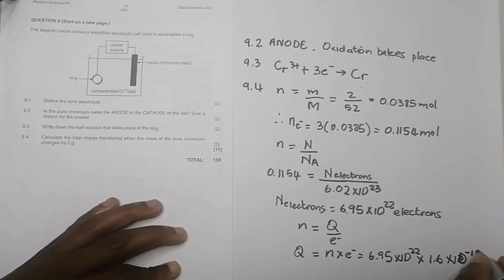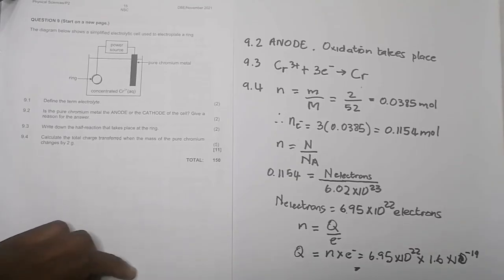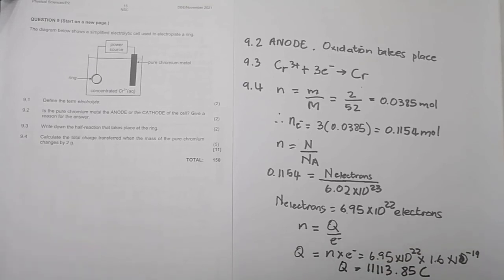I'm just going to multiply by 1.6 × 10⁻¹⁹, and I get an amount of - that's a huge amount of charge - I get 1113.85 coulombs of charge. Please verify that for me and see that's exactly what you get as well. That was the number of electrons we had, and from those electrons we found the charge.